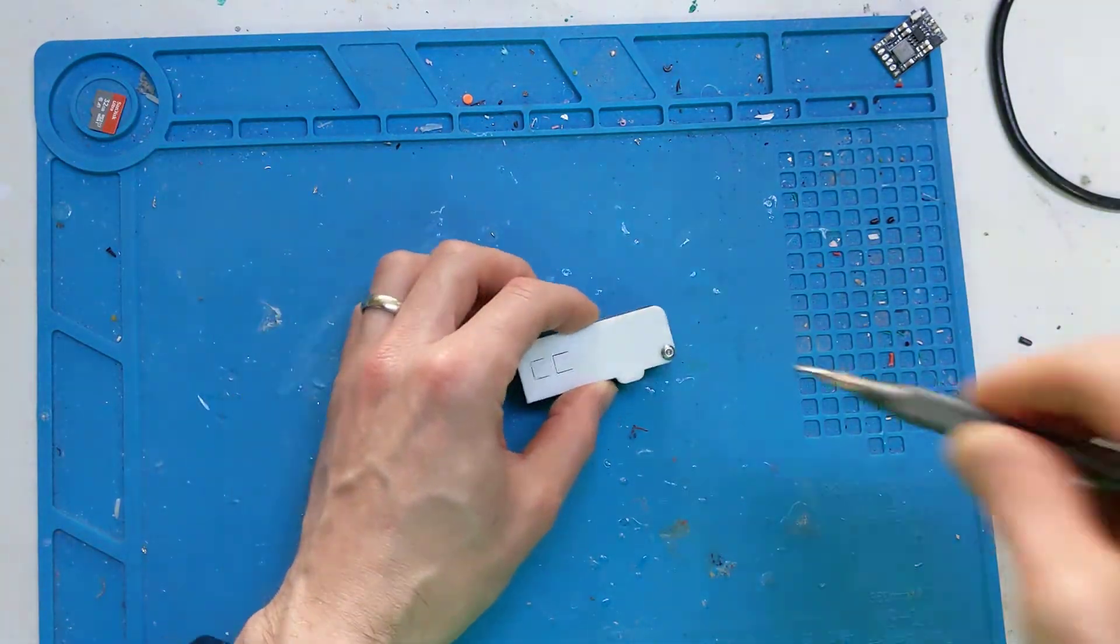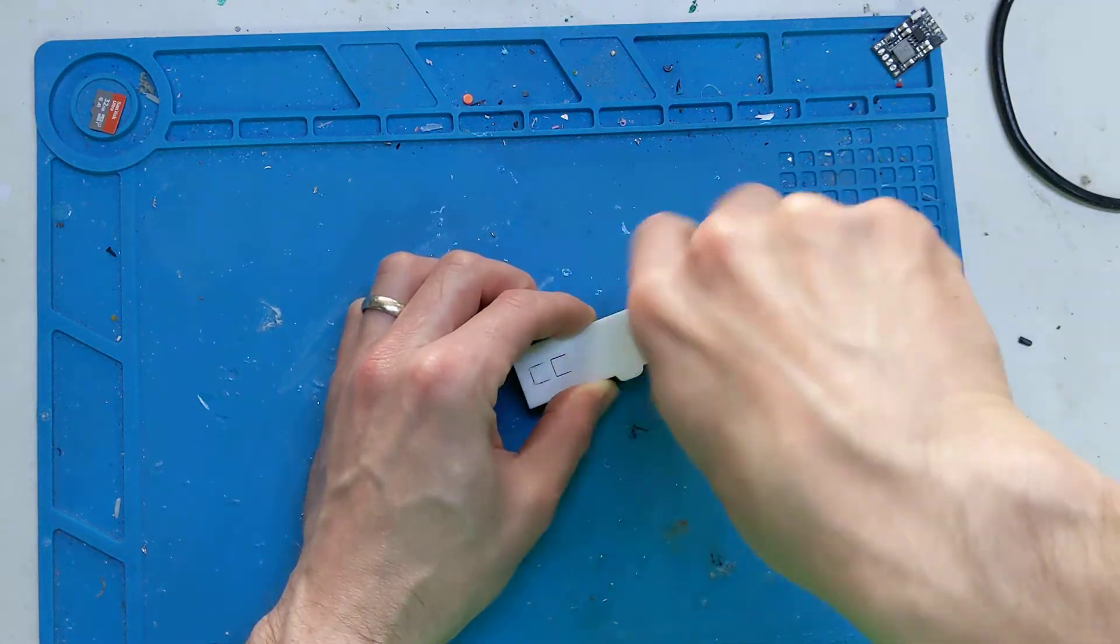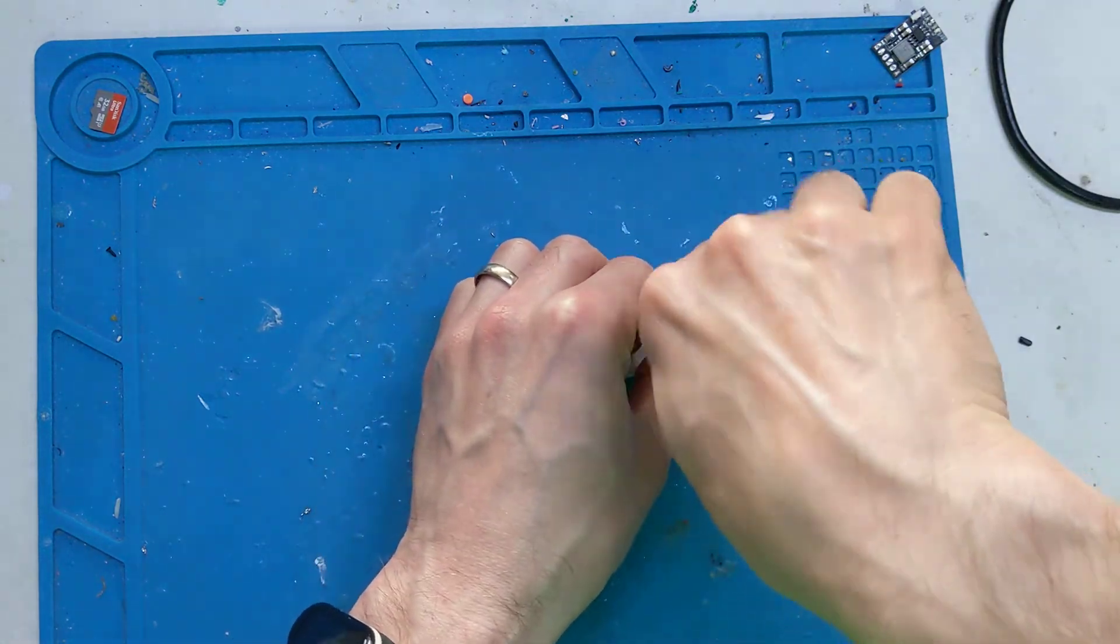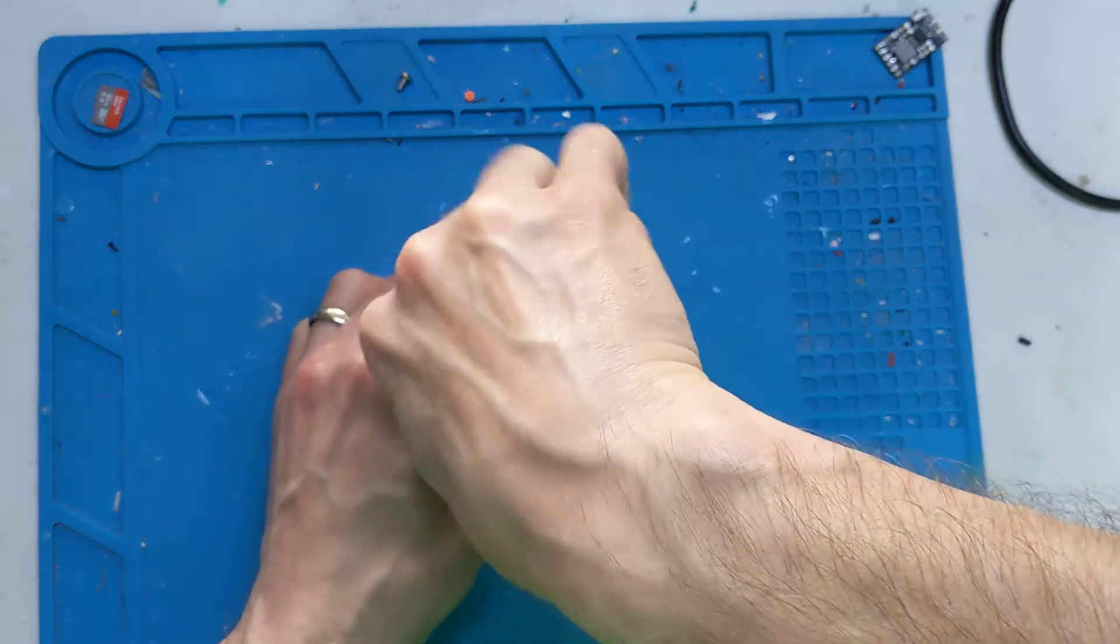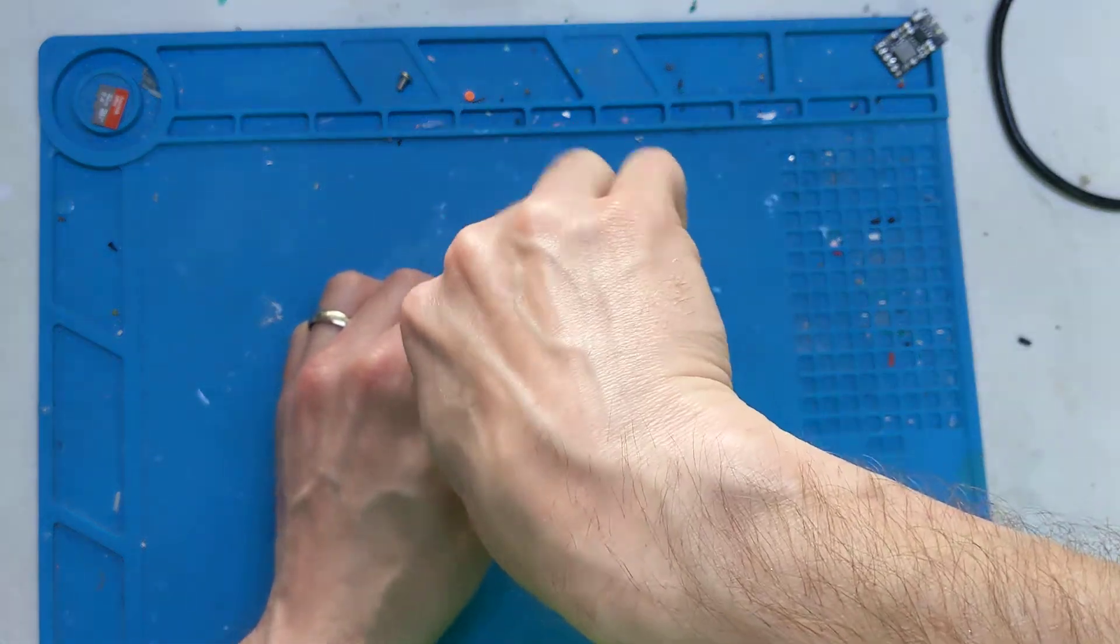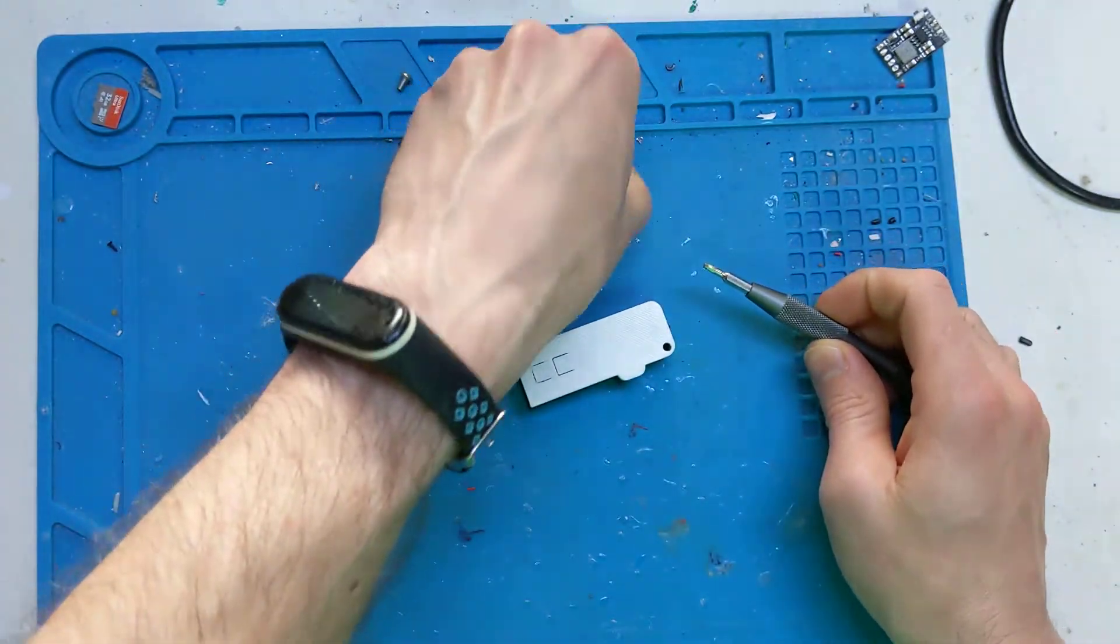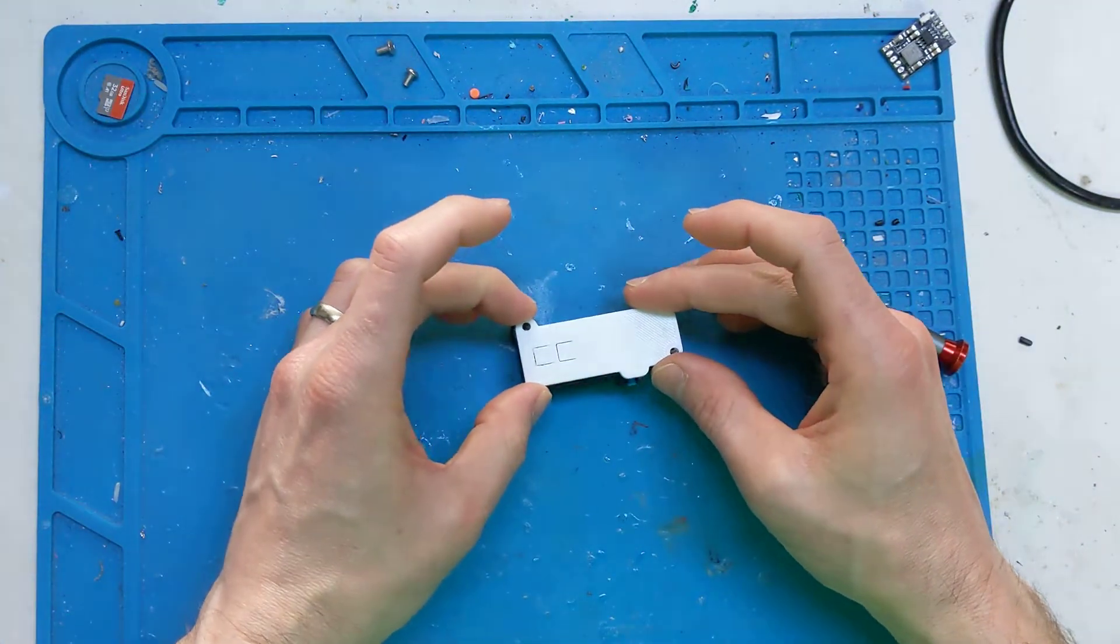If I take it apart, show you the internals of it, it's probably the best way. It's just a point-to-point wiring job, no PCB required, because there's not many connections, and it saves space as well, not using a PCB.